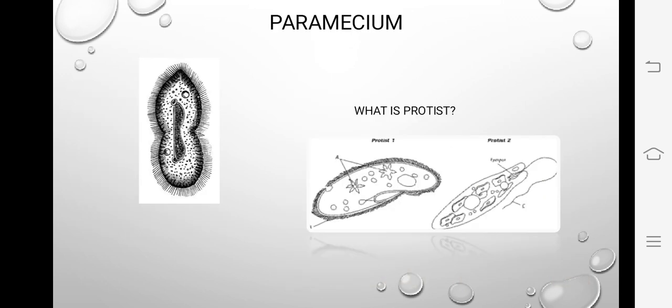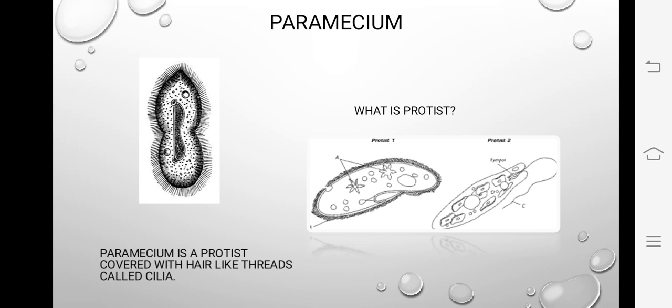Paramecium is a protist covered with hair-like threads called cilia. In the diagram, you can see thread-like structures on the sides of paramecium which help it move in water. Cilia is used for the movement of paramecium. Okay class, today's lesson is here — we will see more in the next video. Allah Hafiz.